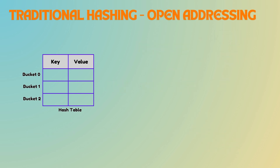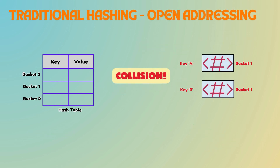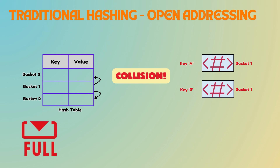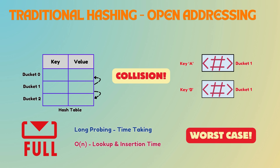In open addressing, when a collision occurs, the algorithm probes the table for an available slot. If the table is nearly full, the probe sequence can become long, leading to O(n) lookup and insertion times in the worst case. Cuckoo hashing is a clever way to handle collisions — let's understand how it addresses the challenges of traditional hashing methods.